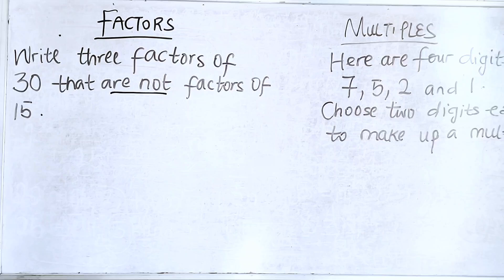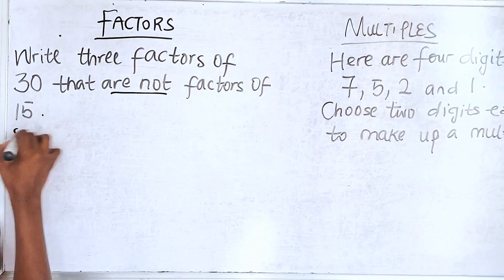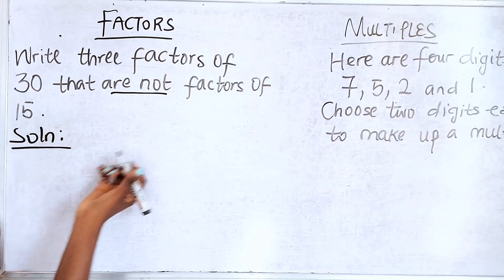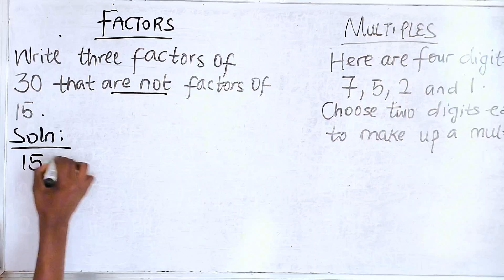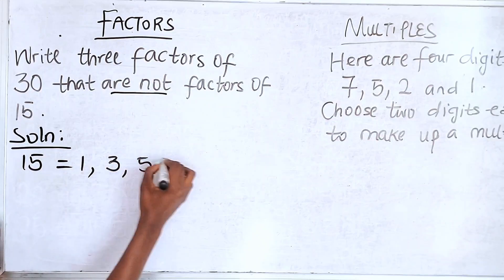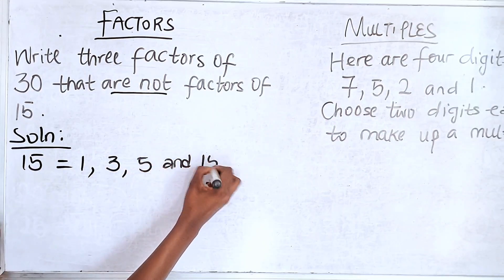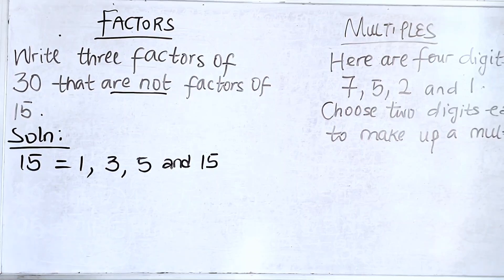Now note this. Some people might not know. Let's solve. Look, if I say factors of 15 are 1, 3, 5 and 15. Some people wonder, how? How does she know that? That is why you have to know your division.